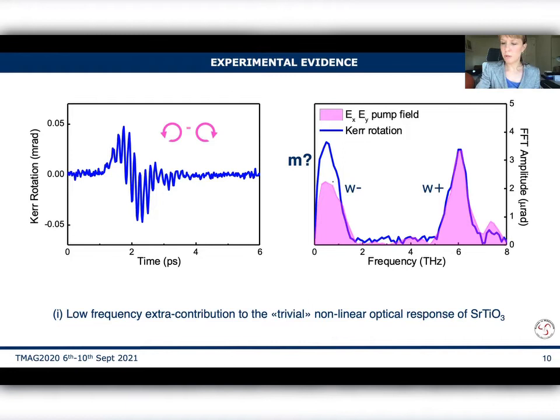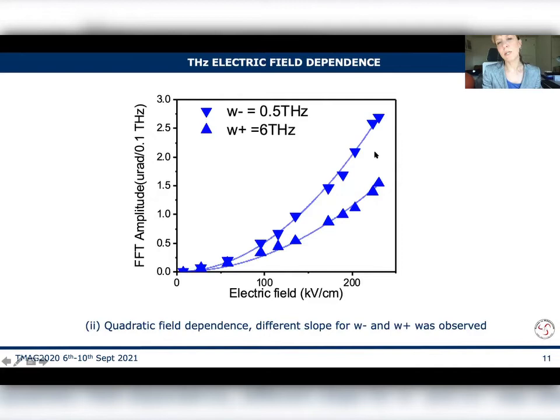So first of all, we did the field dependence. And as you can see here, the two-frequency components has a quadratic field dependence, but with a different slope. And this again means that in the omega minus there is something more, because the slope is higher. So if they would come from the same mechanism, chi-3 of strontium titanate for example, they would have the same slope, because it's the same mechanism.